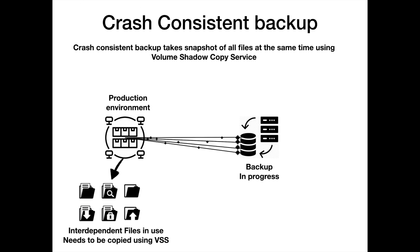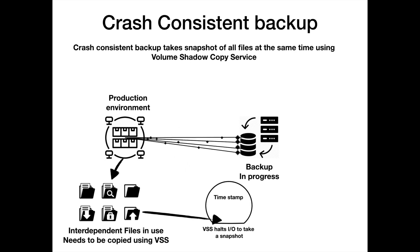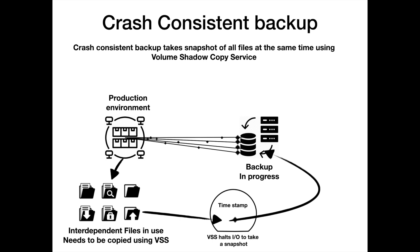To avoid all this, VSS comes to the rescue. What VSS does is it freezes IO — that is, input-output operations on the volume — and queues them up while it captures the snapshot. VSS holds the IO and captures the snapshot with a timestamp. Once it has captured the snapshot, it lets the backup proceed from the snapshot copy, and hence the consistency.